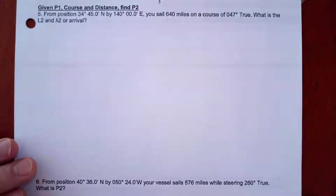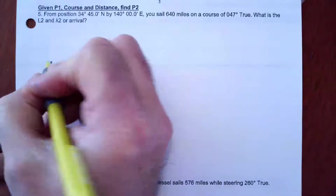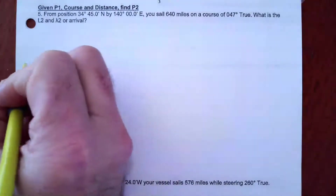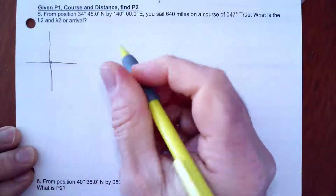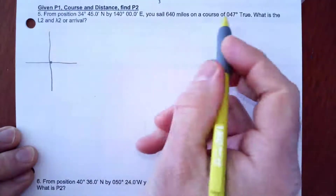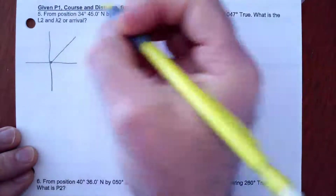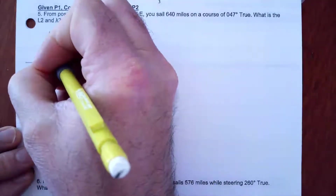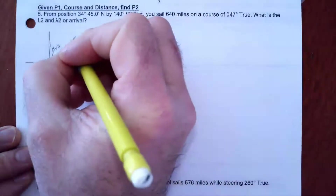I'm going to draw my diagram. This little dot on the paper is my point of departure — that is latitude one and longitude one. I'm going to go 640 miles to the northeast, something like this. We'll say that's D = 640. And 047° is here — that's C, and it's also CN.